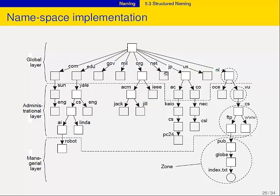Everybody assumes nothing changes at the top-level domain. At the administrative layer you have different organizations responsible for their subtree. At the lowest layer you have your own file system, for example. What I also drew here — and this is extremely important — is the separation between the logical namespace and its implementation, the physical design. What I drew are zones. A zone is handled by a single server, which maintains a part of that namespace and may contact other name servers responsible for another part of the tree. You have the logical tree and you have the physical tree, which is made up of actual servers responsible for part of the DNS tree.